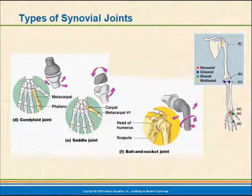The saddle joint gives us some unique abilities — we have a saddle joint in our thumb, which gives us the opposable thumb. We can take the tip of our thumb and touch it to the tips of our fingers, allowing us to manipulate tools in a way that other animals can't. Many believe this opposable thumb is one of the reasons humans are able to use tools so effectively. The ball and socket joint allows the freest movement of all — movement in all directions — but it is also one of the less stable joints and is more easily dislocated.